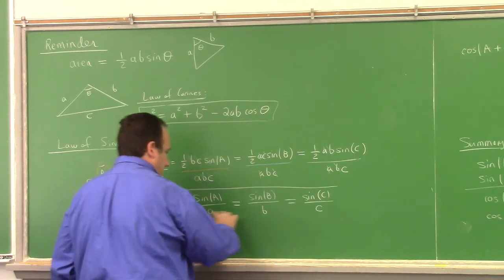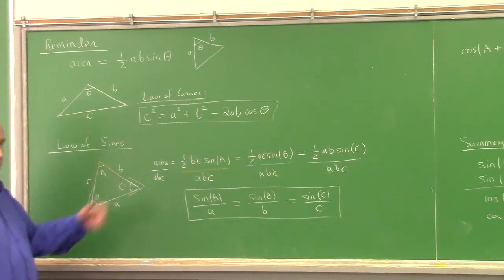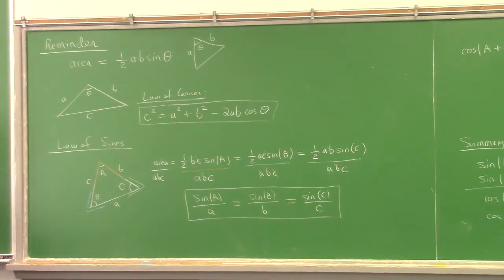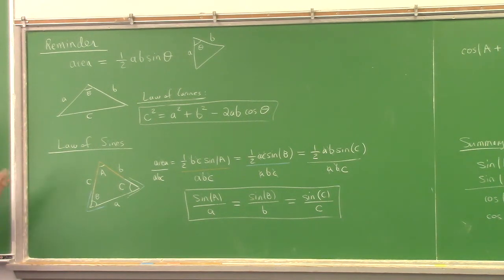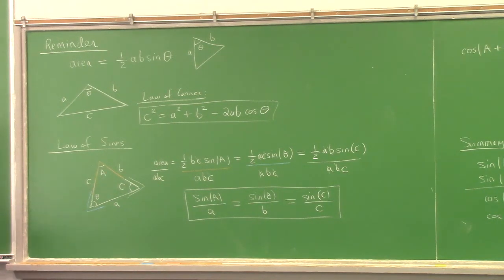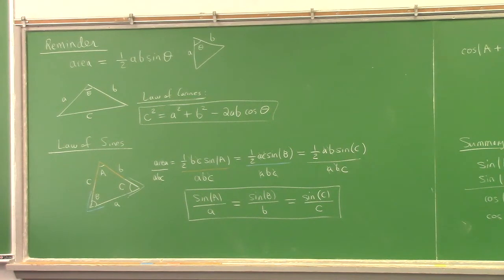This, my friends, is the law of sines. It's very useful because it gives us another relation between the sines of the angles and the lengths of the sides. On a proof level, this is really easy to prove — compared to the law of cosines, this was pretty low-hanging fruit. The law of cosines we had to work at, but this one wasn't bad.